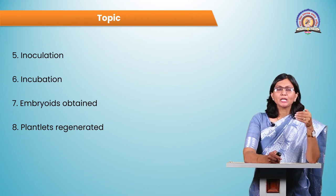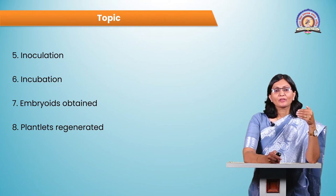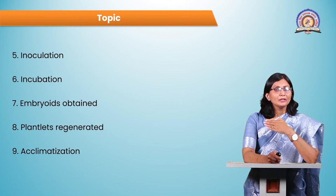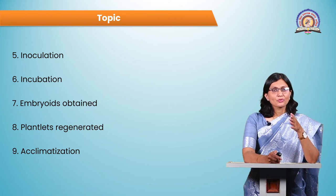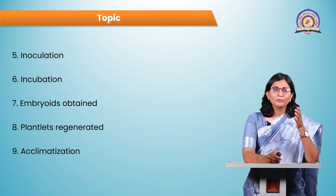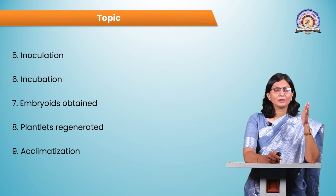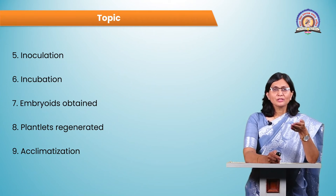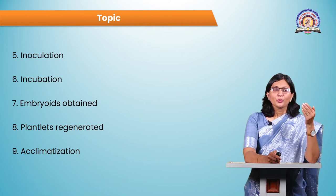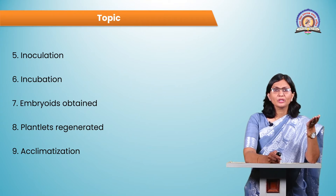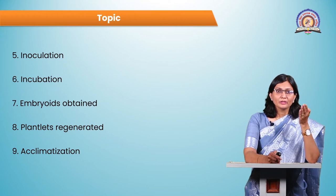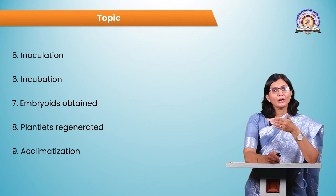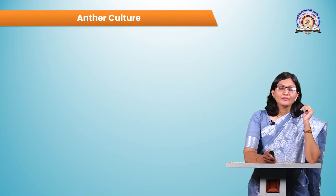After obtaining embryoids or callus, plantlets are finally regenerated. We cannot transfer them directly to the field because harsh climatic conditions may destroy or harm the tender plantlets. Acclimatization is needed first — which means adaptation to the harsh environment. The plantlets grown on MS media are transferred to sterile soil in a greenhouse, and after growing there for a few weeks, they can then be transferred to the field.